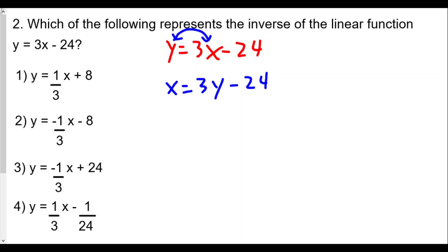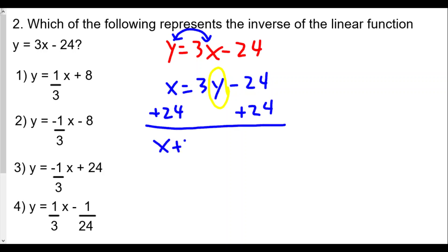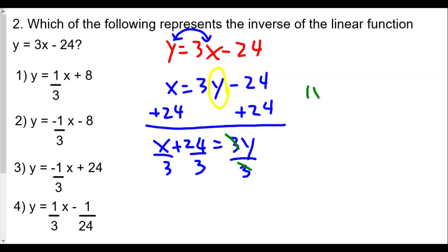Now we're looking for y in terms of x, so we add 24 to both sides to get x plus 24 equals 3y. Our next step is to divide everything by 3. Instead of a single bar over the whole expression, we divide each term by 3: 3 divided by 3 is 1, so we have y equals one-third x.